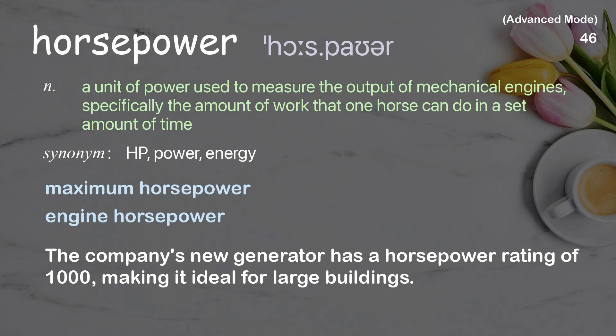Horsepower: a unit of power used to measure engine output. Examples: maximum horsepower, engine horsepower. The company's new generator has a horsepower rating of 1,000, making it ideal for large buildings.